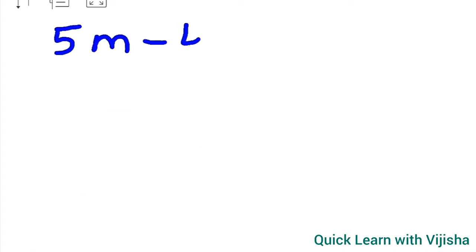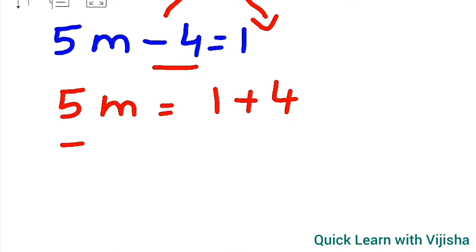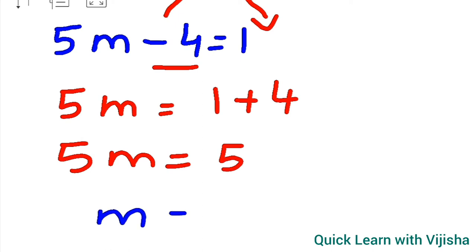The third question is 5m minus 4 is equal to 1. First we solve for the numbers — minus 4 is taken to the right side, becoming plus 4. What remains on the left is 5m. So 5m is equal to 1 plus 4, which gives 5.